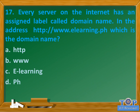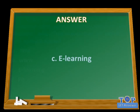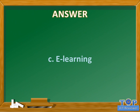Question number seventeen: Every server on the internet has an assigned label called domain name. In the address http://www.elearning.ph, which is the domain name? A. http. B. www. C. elearning. D. ph. Answer: C. elearning.